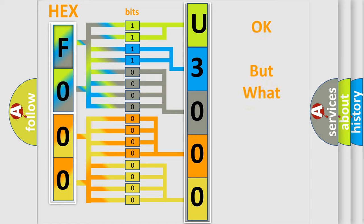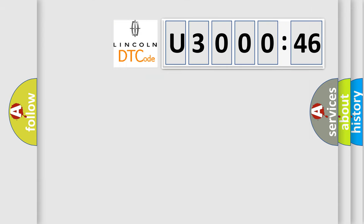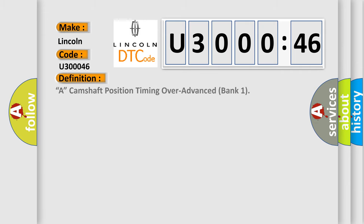We now know in what way the diagnostic tool translates the received information into a more comprehensible format. The number itself does not make sense to us if we cannot assign information about what it actually expresses. So, what does the diagnostic trouble code U30046 interpret specifically for Lincoln car manufacturers?